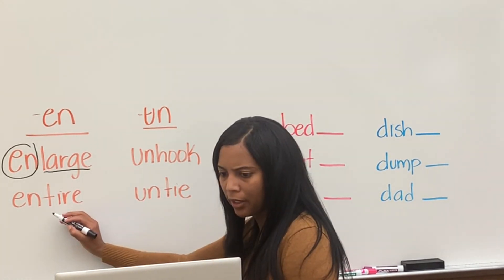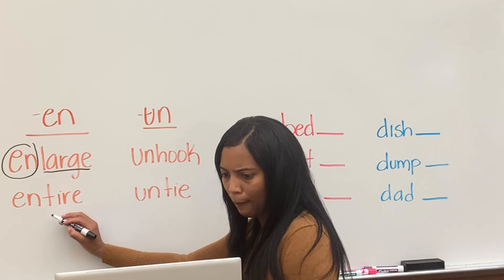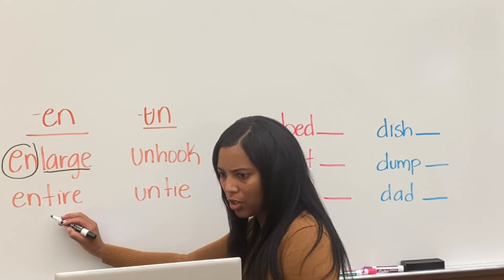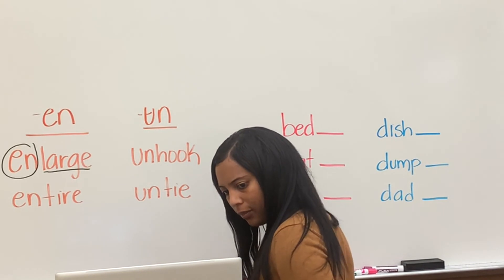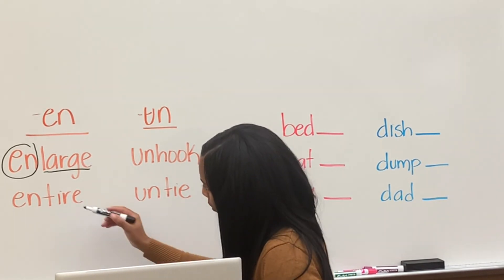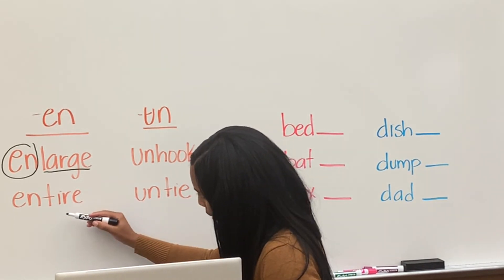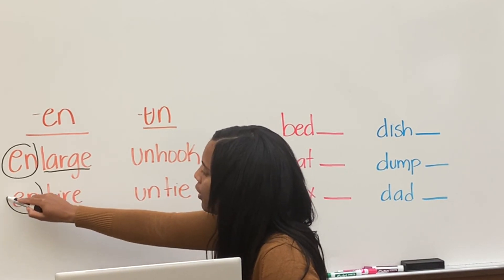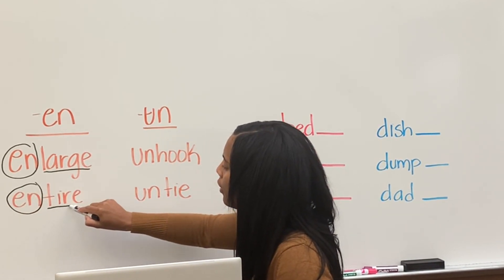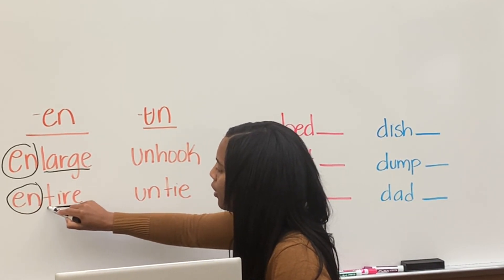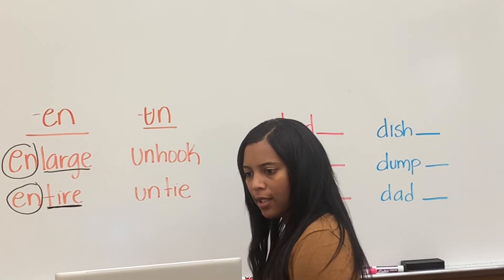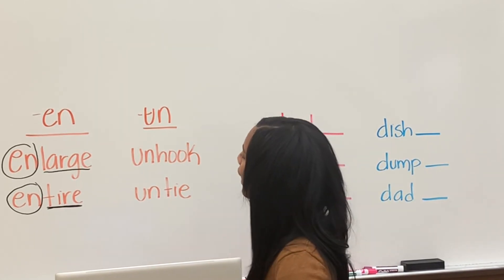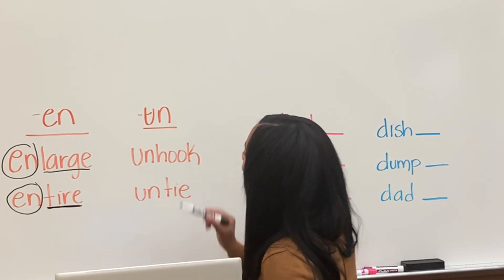Let's try this one here. Go ahead, Josiah. Circle the prefix: E-N. Underline the root word. And the word is? Entire. Good.